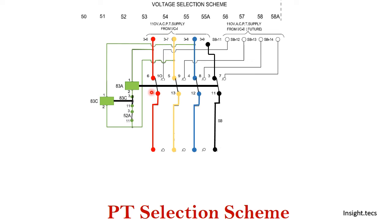What happens when we want to connect to bus two is: if this 52A breaker for incomer one is open and not closed, then automatically the switches will be connected on bus number two — transformer number two. Once it gets connected to that side, PT two is selected, and that PT is further connected to all the panel boards and gives supply to the bus.